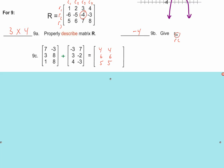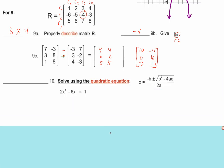What if it were the first matrix minus the second one? Seven plus three is ten; negative three and negative seven is negative ten; three minus three is zero; eight minus negative two — that's ten; one minus four is negative three; eight minus negative three is eleven. Don't let the subtraction scare you — no big deal.